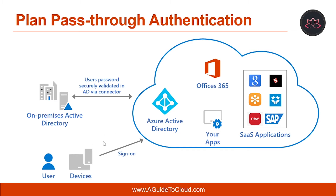When a user accesses a cloud service that relies on Azure AD, he or she is presented with an Azure AD login page. After the user enters credentials, the Azure AD service checks if the connector for pass-through authentication is configured for the user's domain. If it is, credentials are placed on the connector queue for validation. A connector agent deployed on-premises then retrieves user credentials and performs authentication against the locally deployed Active Directory. The response from Active Directory is returned to the connector, and the connector provides this response to Azure AD.